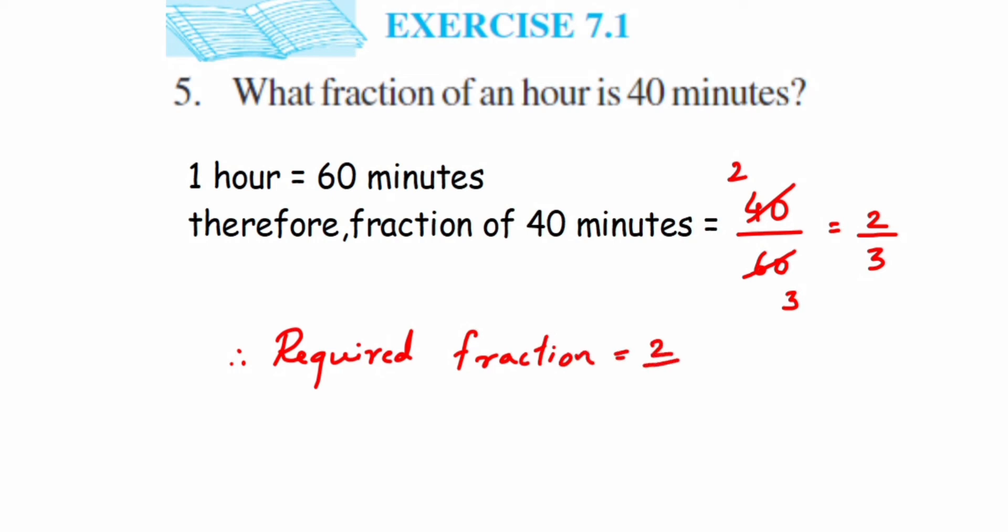Two-thirds or 2 upon 3 of one hour is equal to 40 minutes—that is what they're asking here. I'm going to cross check the answer. This is not required, but I'll show you how we got it. Two upon 3 of one hour, which is 60 minutes, equals 2 upon 3 of 60 minutes.